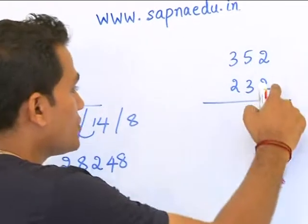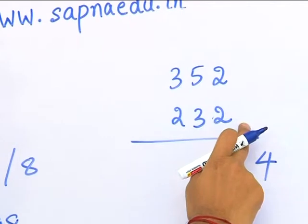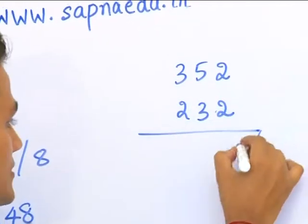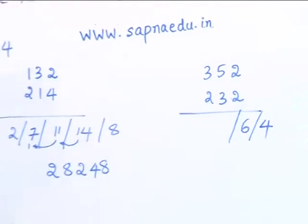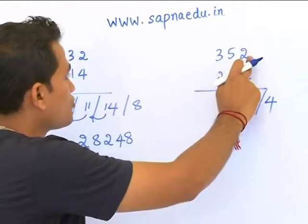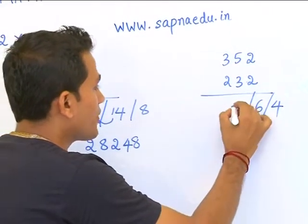So the first step is 2 into 8 is 16. Second step is 5 into 8 is 40 plus 3 into 2 is 6. 40 plus 6 is 46. So the third step is 3 into 8 plus 2 into 2 plus 5 into 2. That equals 15.